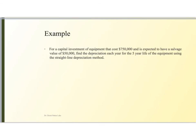Let's look at this in an example. We have a capital investment of some equipment that costs $750,000 and is expected to have a salvage value of $50,000. We want to find the depreciation each year for the five-year life of the equipment using this method. So our formula simply says that for each year, using the straight line depreciation method, I'm going to take the fixed capital investment — there is no land in this — so $750,000 minus $50,000 the salvage value, divided by the five-year life. So $700,000 divided by five is $140,000 per year.